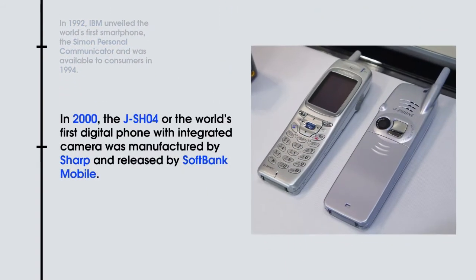In 2000, the J-SH04, or the world's first digital phone with an integrated camera, was manufactured by Sharp and released by SoftBank Mobile.